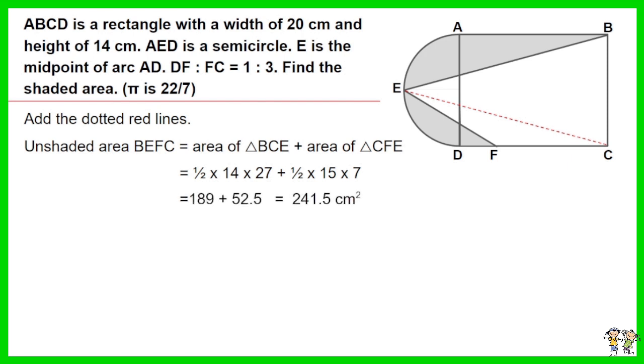Solve the equation. The unshaded area BEFC equals 241.5 cm square.